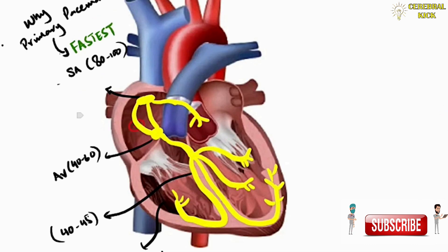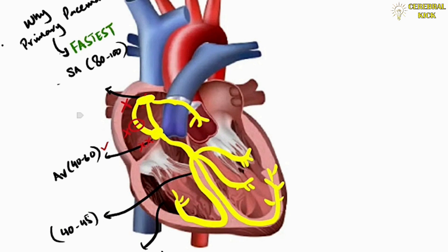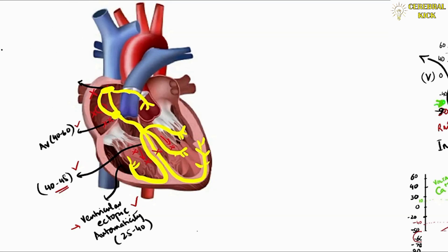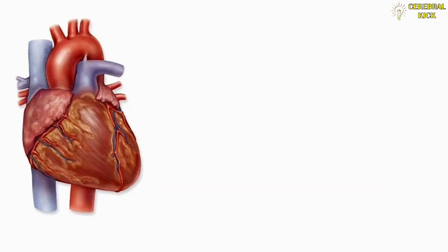Nature has its own safety systems. When the SA node is out of order, the AV node comes into effect. If the AV node is compromised, the ventricles start following the bundle branches at 40 to 45 beats per minute. And if the bundle branches are compromised as well, the ventricle beats at its own intrinsically driven rate of 25 to 40 beats per minute. This is an added safety system within the heart's conduction system — if the primary pacemaker fails, there are secondary and tertiary level pacemakers within the ventricles.